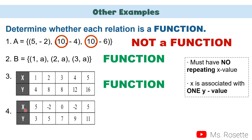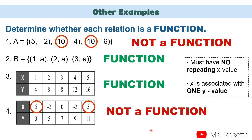Another example: values of x are 5, −2, 0, −2, 5, and for y values we have 3, 5, 7, 9, 11. As you can see, we have repeating x values here — two 5s as well as two negative 2s. Therefore, this set is not considered a function.